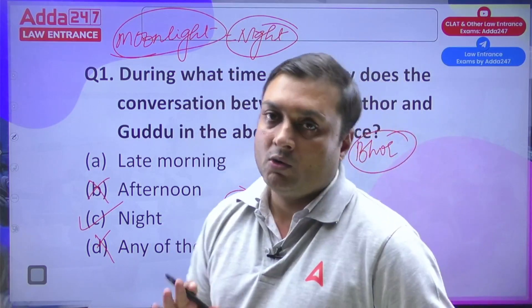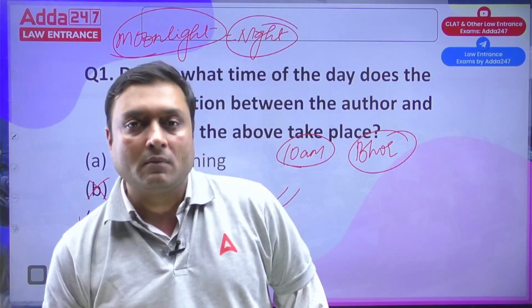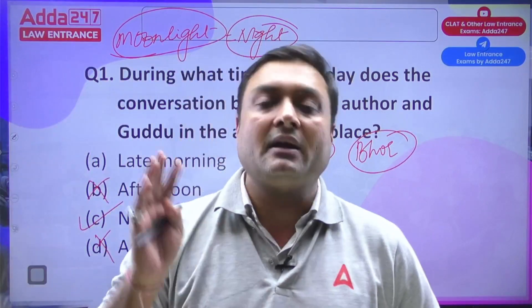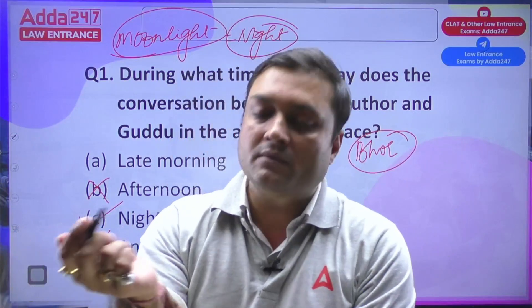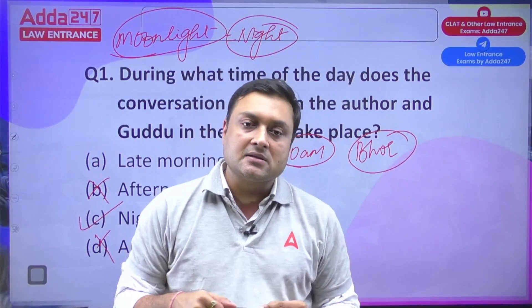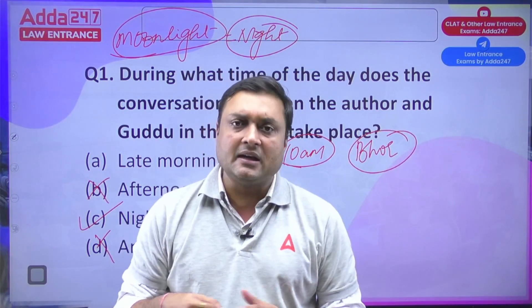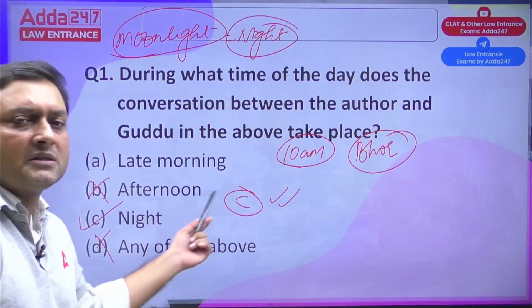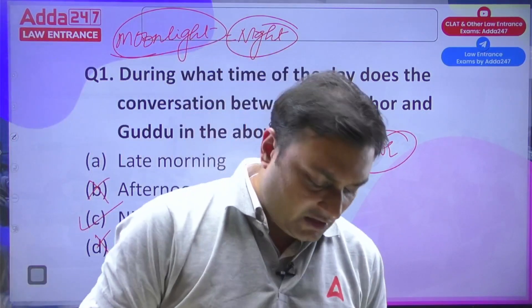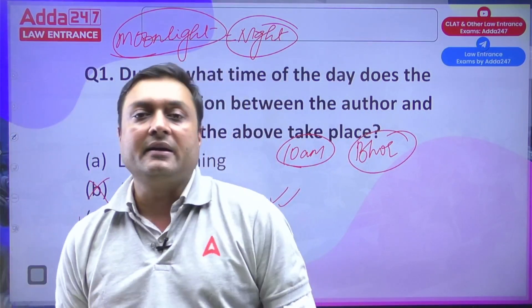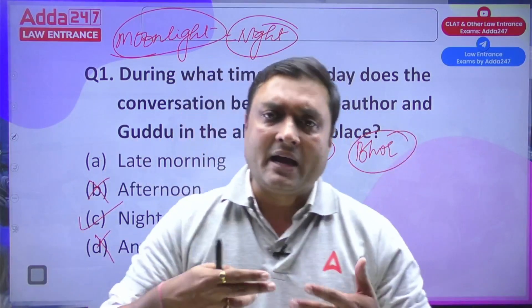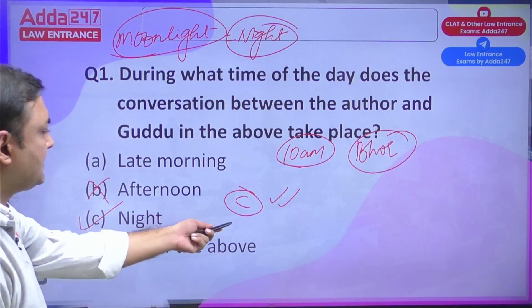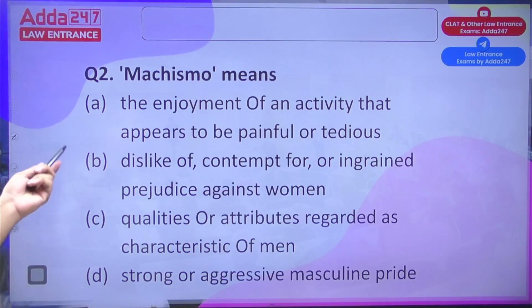When the consortium releases the official answers, we will match and check for any discrepancy. If there is a discrepancy, we'll see whether the consortium is right or wrong and examine if their logic differs from ours. But I am pretty confident that C — night — is the correct answer. That was a fairly easy question.